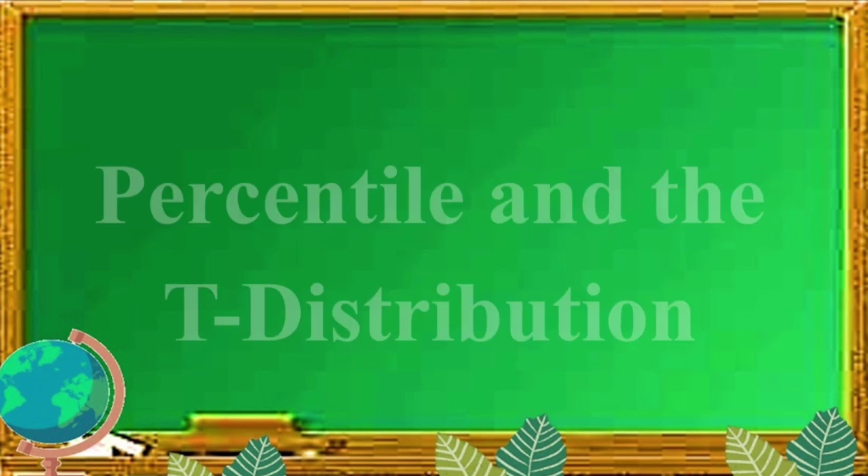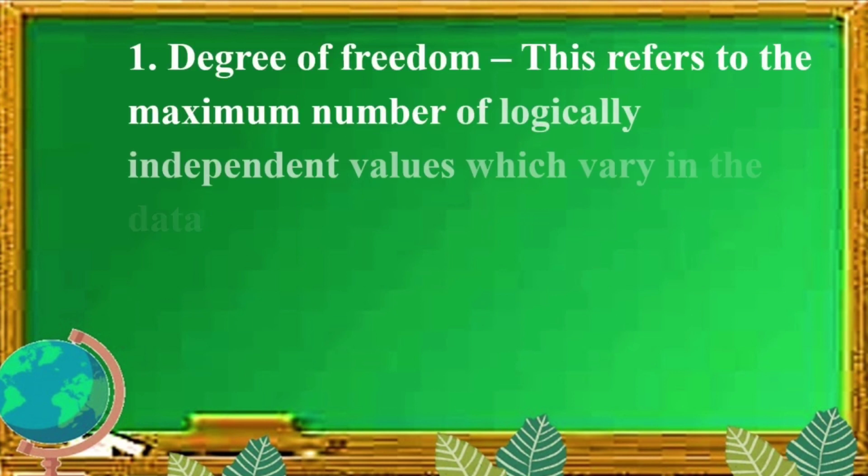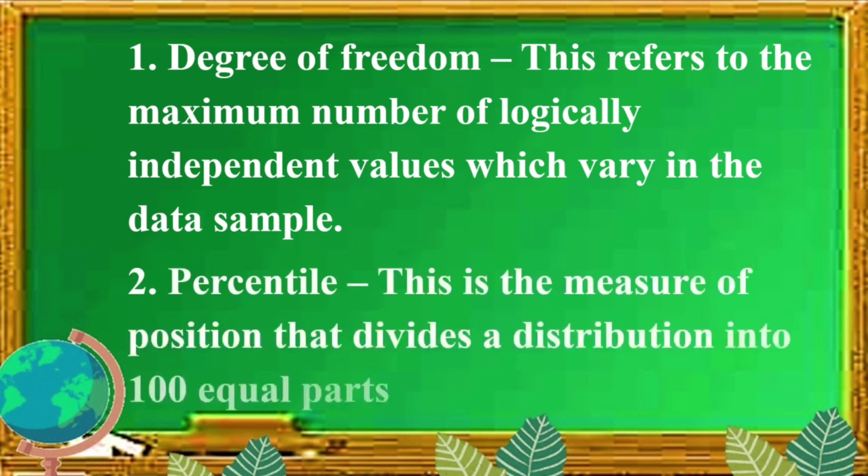You have learned already about finding the mean and the variance of the sampling distribution of the sample means. And now, our new topic is about percentile and the T distribution. In this lesson, you will explore and understand the T distribution and identify the percentiles using the T tables. Before we discuss percentiles and T distribution, let us be familiarized first with these words. First, degree of freedom. This refers to the maximum number of logically independent values which vary in the data sample. Second is percentile. This is the measure of position that divides a distribution into 100 equal parts.